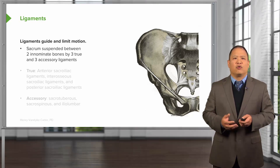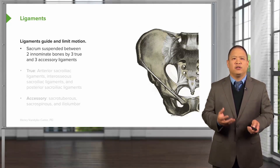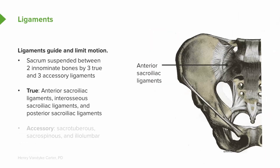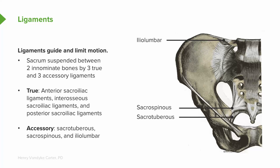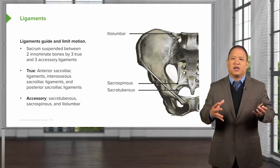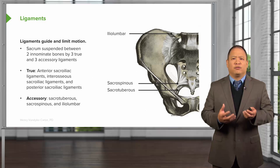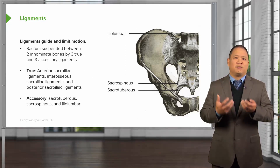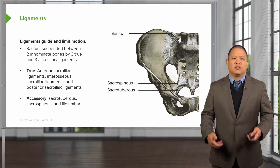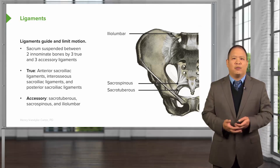The sacrum is supported by three true ligaments and three accessory ligaments. The true ligaments are the anterior iliac ligament, the interosseous sacroiliac ligaments, and the posterior sacroiliac ligaments. The accessory ligaments include the sacrotuberous, sacrospinous, and iliolumbar ligaments. All these ligaments combine and help to suspend the sacrum, bearing the brunt of all the forces of the rest of the spine from above and also the forces from the lower extremities and impact from ambulation and walking.